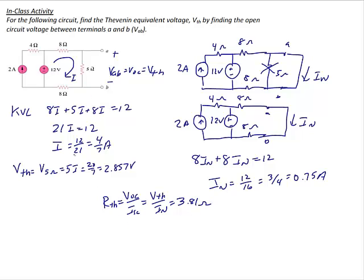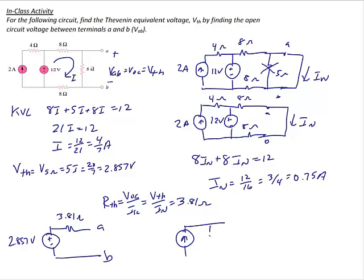This is the same circuit from the prior example, now demonstrating two methods to find R_Thévenin yielding the same result. Verifying: R_Thévenin = V_oc / I_sc = V_Thévenin / I_Norton = (20/7) / 0.75 = 3.81 ohms, consistent with the earlier calculation. The Thévenin equivalent circuit is a 2.857-volt source in series with a 3.81-ohm resistor. The Norton equivalent circuit is a 0.75-amp current source in parallel with a 3.81-ohm resistor.